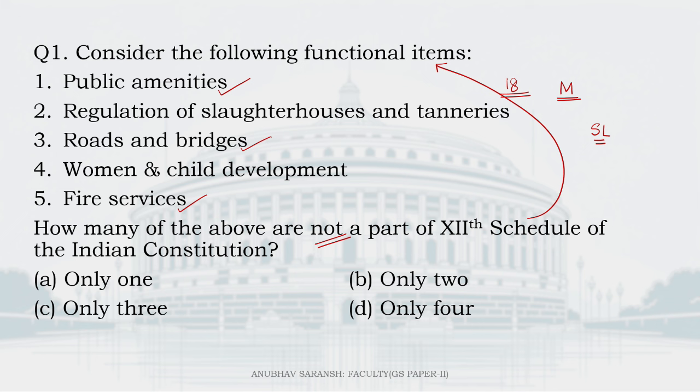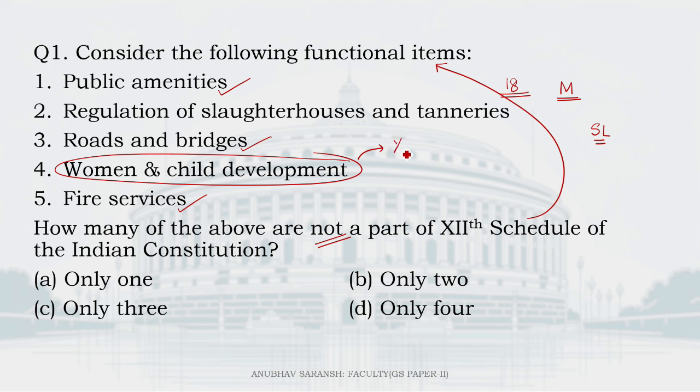Other topics include urban forestry and slum improvement. However, women and child development as a direct entry is not mentioned under Schedule 12. In fact, this is mentioned under Schedule 11.